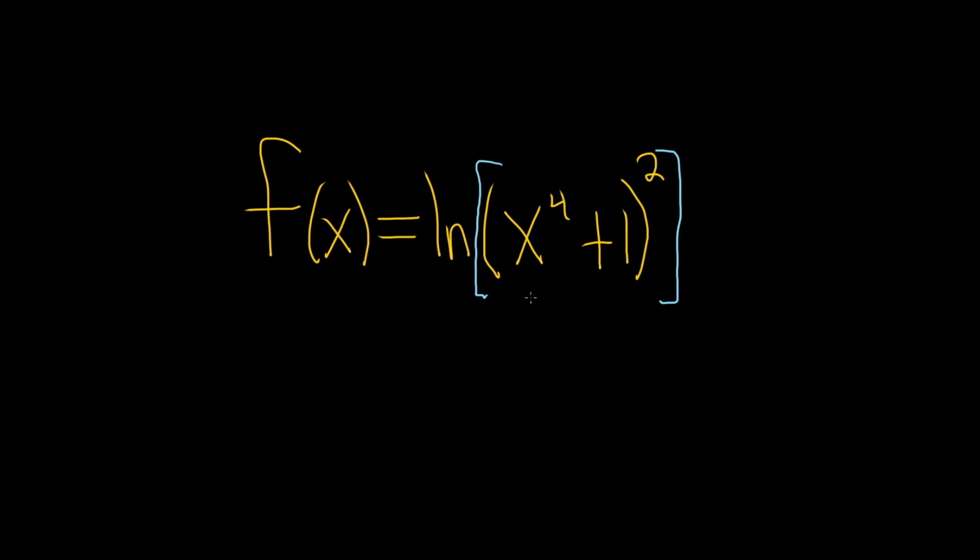So what we can do is use what's called the power rule for logs, which says whenever we have a number here, we can bring it down and put it in the front. So let's do that. f of x is equal to two times the natural log of x to the fourth plus one.